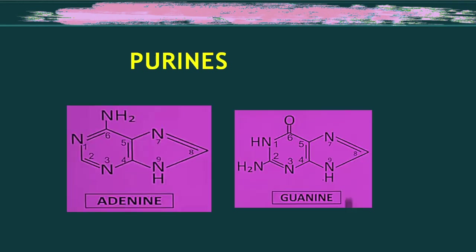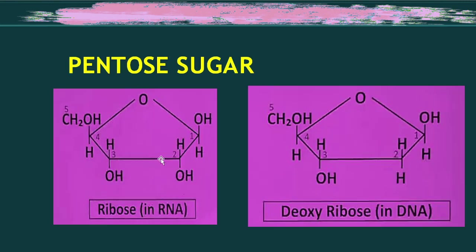This is the purine structure, that is adenine and guanine. Here you can see the phosphate sugar. There are two types: RNA contains ribose sugar, and DNA contains deoxyribose sugar.